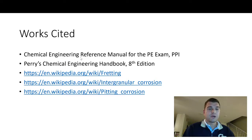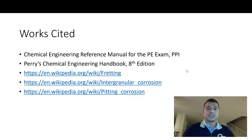Here are my works cited. I used some Wikipedia sources, Perry's Chemical Engineering Handbook, and the Chemical Engineering Reference Manual, which is a good quick guide to different types of corrosion. Hopefully you learned something or liked this video — thank you for watching.